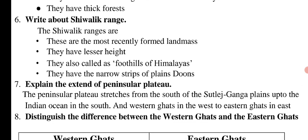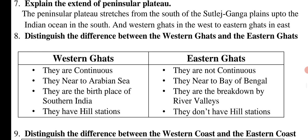Explain the extent of the Peninsular Plateau. The Peninsular Plateau stretches from the south of the Satellite Ganga Plains up to the Indian Ocean in the south, and from the Western Ghats in the west to the Eastern Ghats in the east. Distinguish between the Western Ghats and the Eastern Ghats. Western Ghats are continuous; Eastern Ghats are not continuous. Western Ghats are near the Arabian Sea; Eastern Ghats are near the Bay of Bengal. Western Ghats are the watershed of Southern India; Eastern Ghats are broken down by river valleys. Western Ghats have hill stations; Eastern Ghats do not.